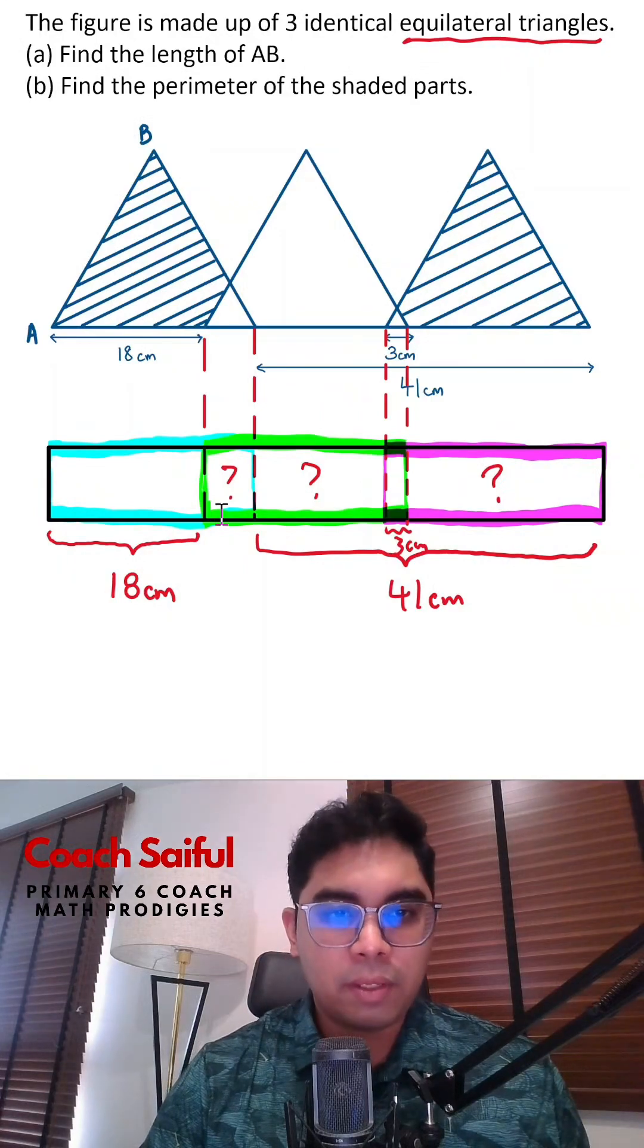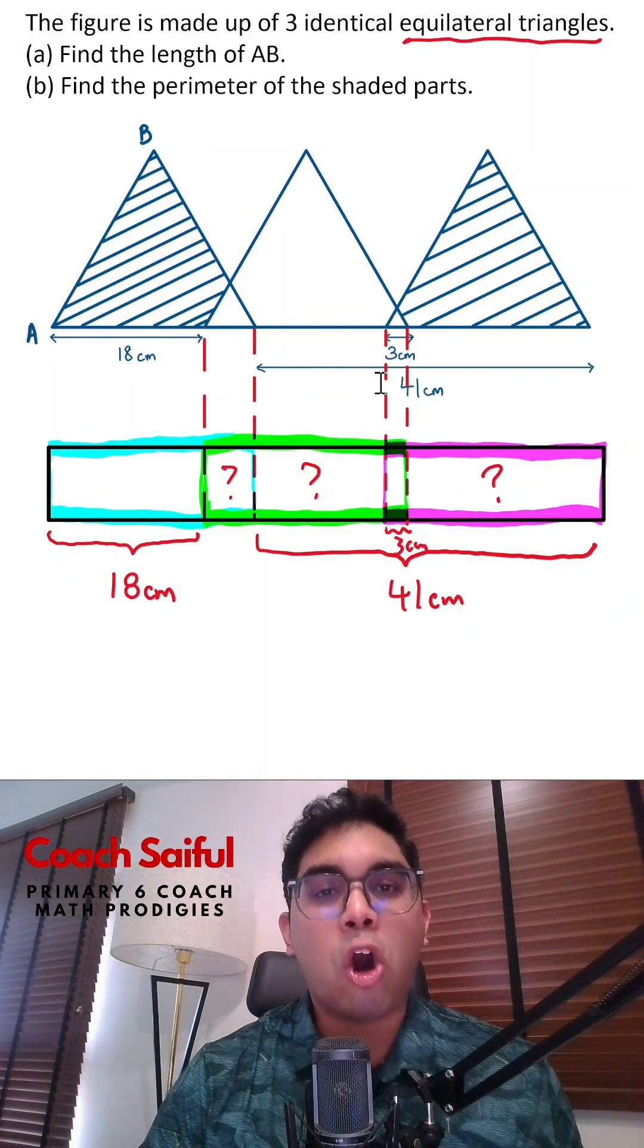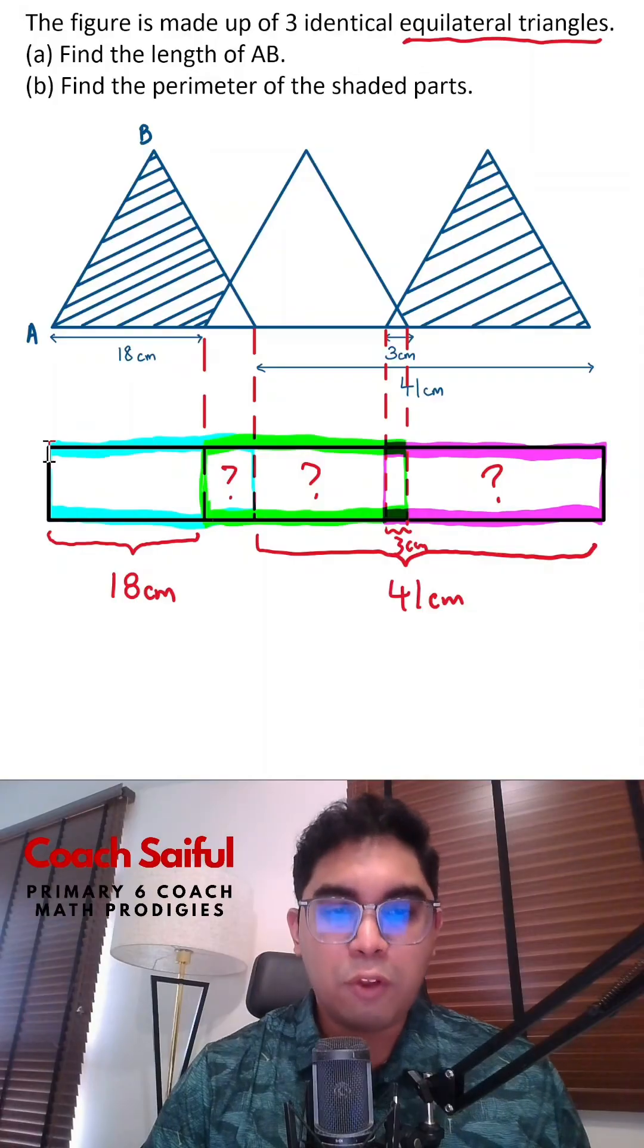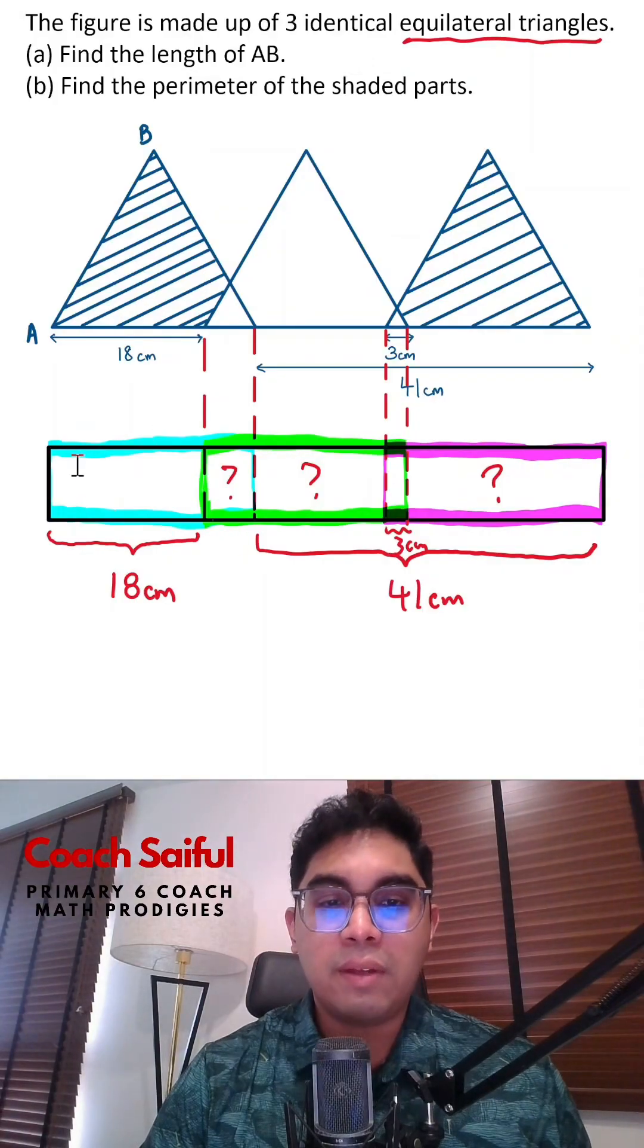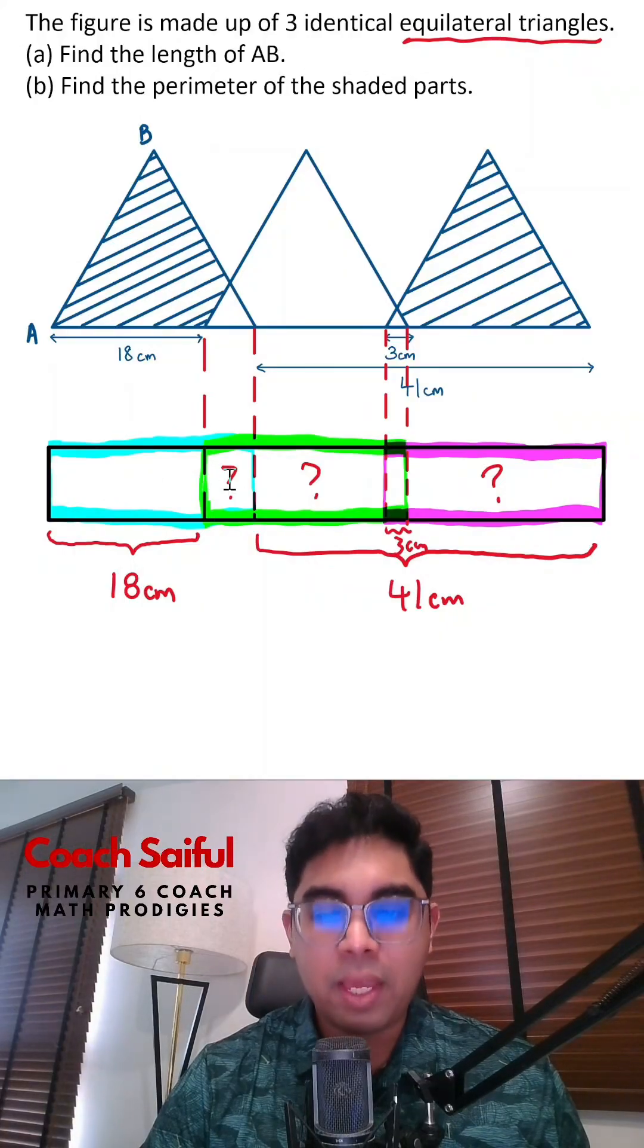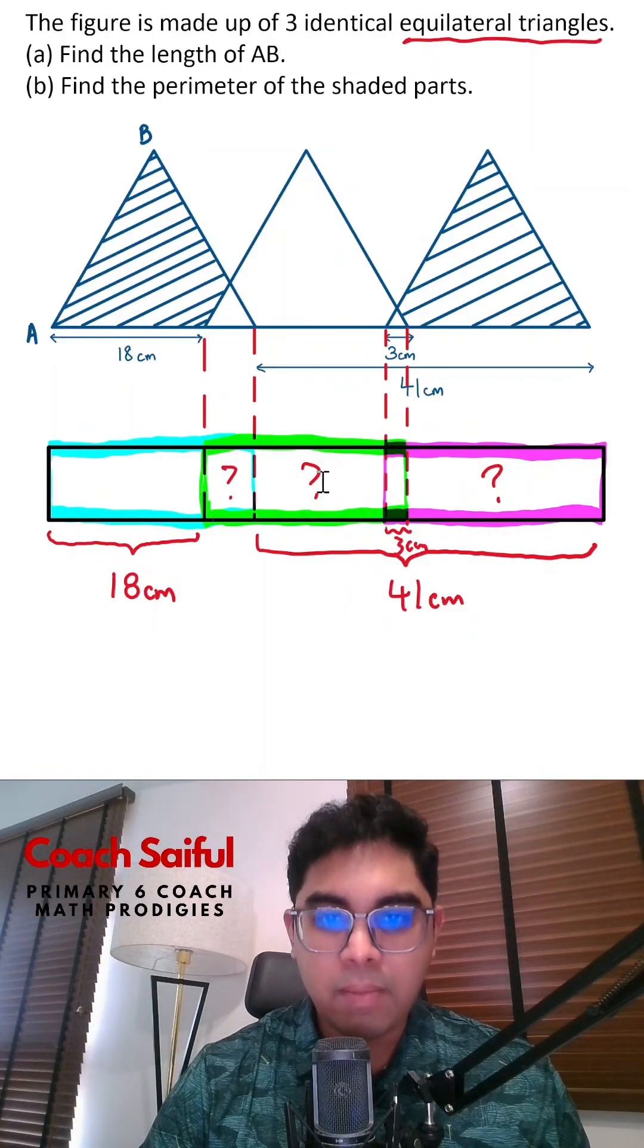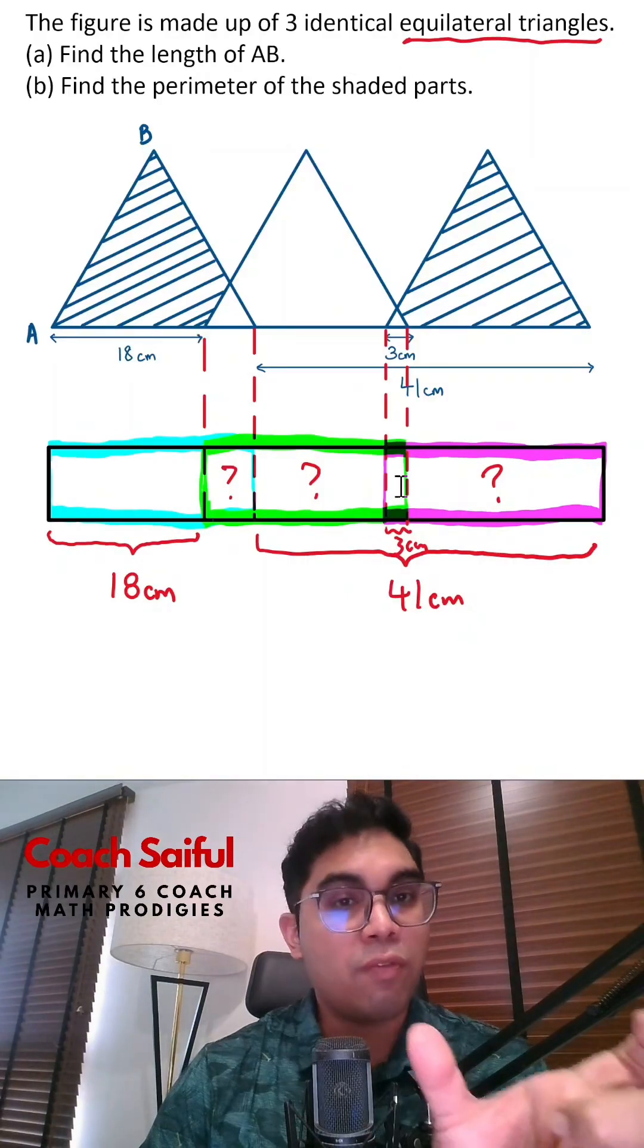So notice something. The first triangle and the second triangle share a common length, which is this segment over here that we don't know. Now, that's very important. Okay, because why? If you look at the blue segment, right, there's the length of the first triangle. It is this 18 centimeters plus the unknown length, right? And if you look at the second triangle, right, you can see that the unknown length plus this segment plus that little 3cm is going to be equal to the length of the triangle.